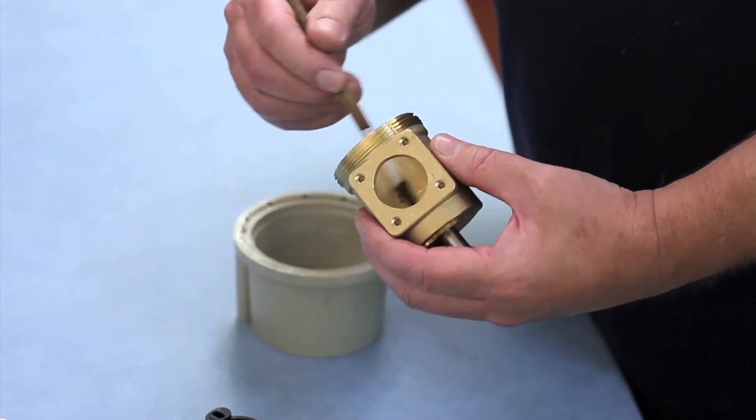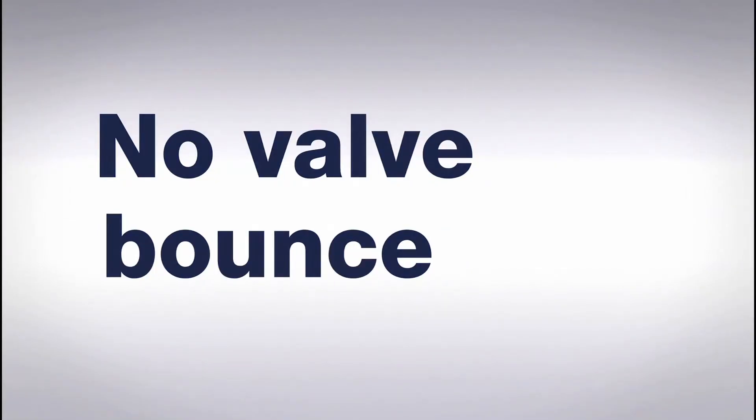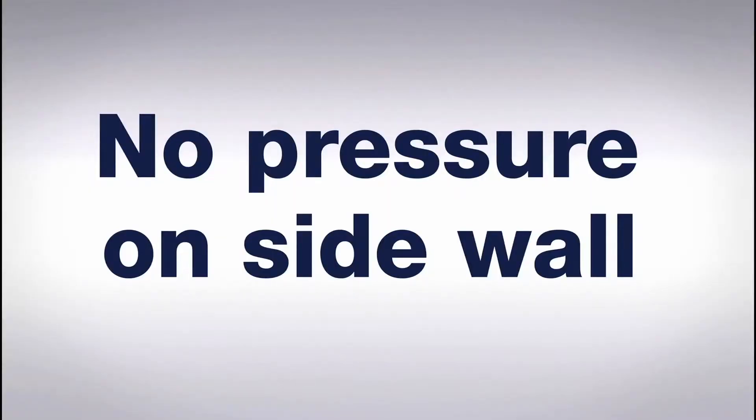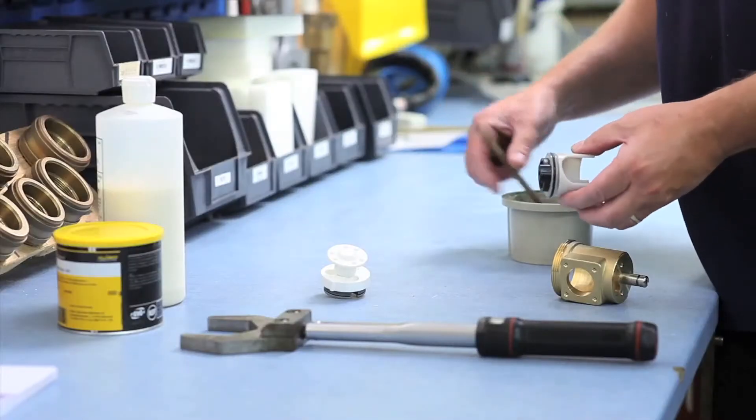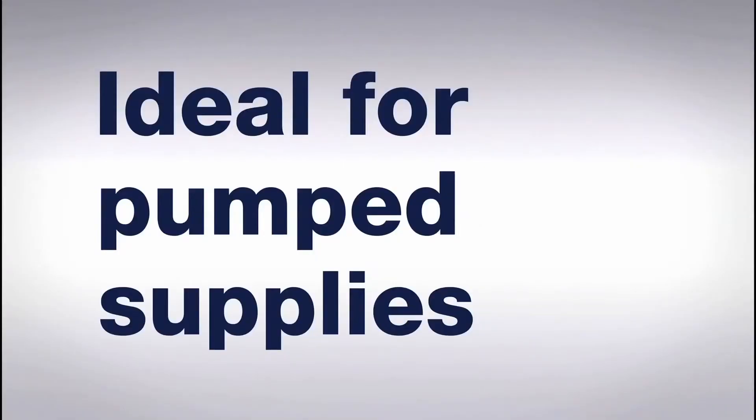The design of the KB and the other two valves means that problems such as water hammer and valve bounce are eliminated, and there's no pressure on the sidewall of the tank which can otherwise lead to leaks and wear on flanges. The three valves are ideal for pumped supplies.